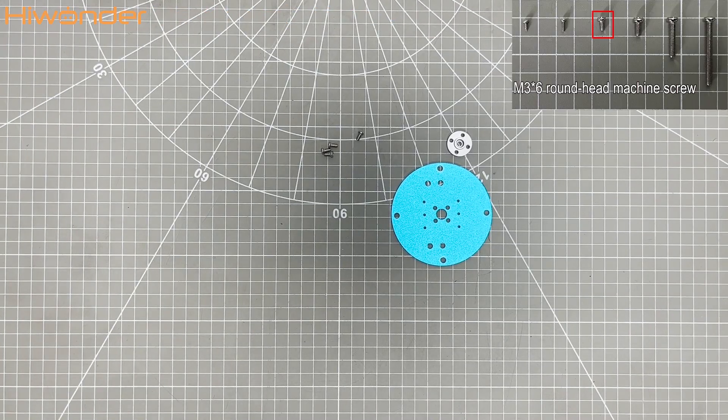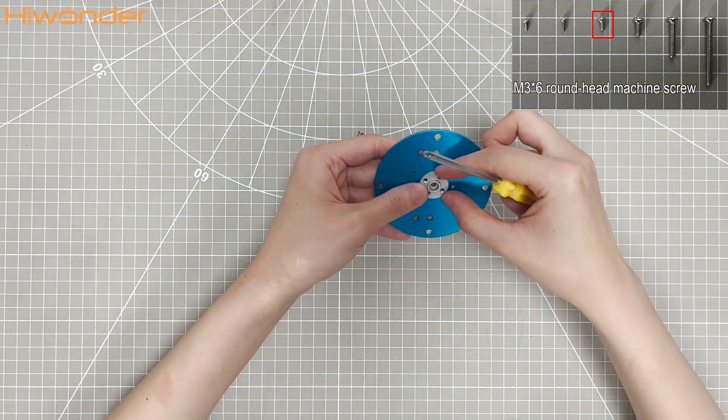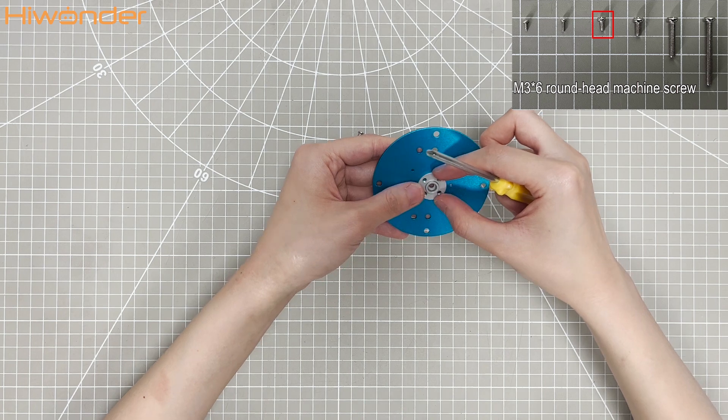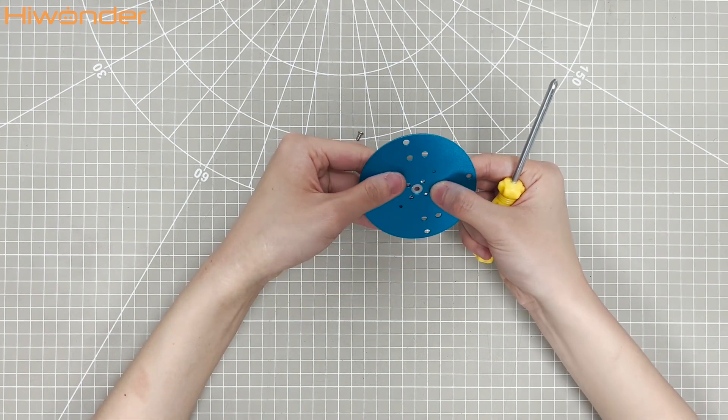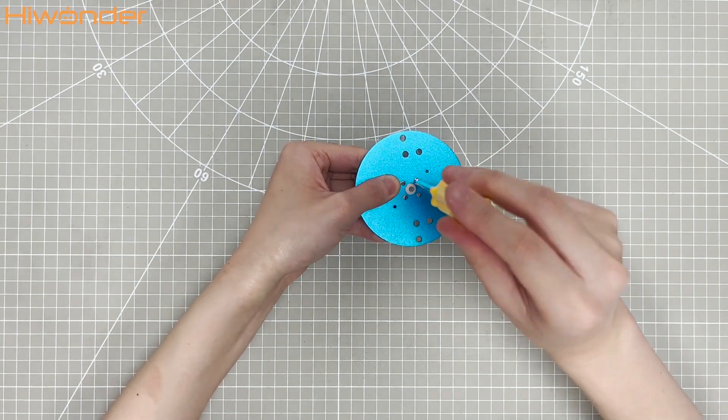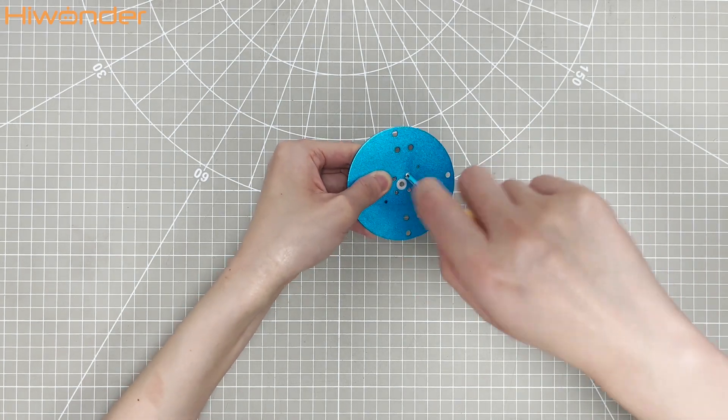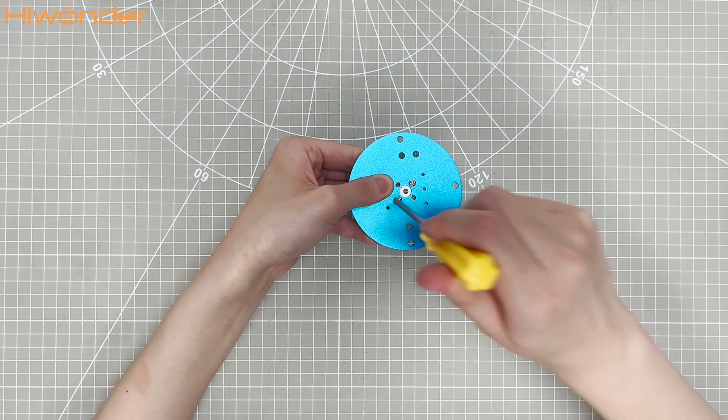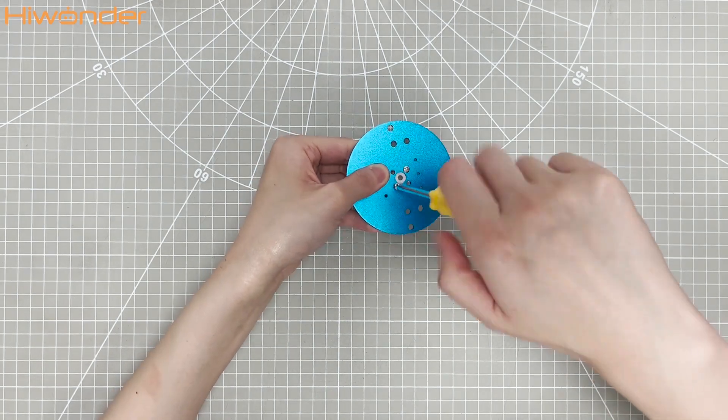Let's install the servo horn onto the other small round bracket with screws. Again, align the holes by fixing the screws diagonally.